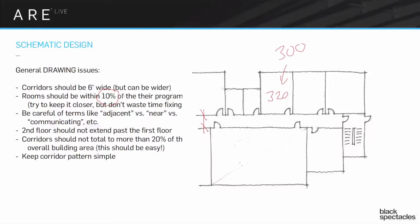This is a very lenient number, that 10% tolerance. It's actually fairly easy to make that work. And then we started talking earlier about the idea of being careful about adjacent versus near, versus communicating, all those kinds of terms. That's something you're just going to have to test and get used to, and it'll start to make sense as you try it out a few times.